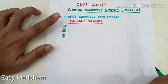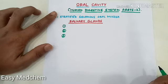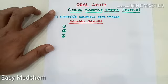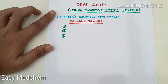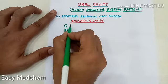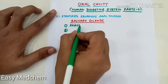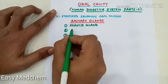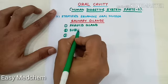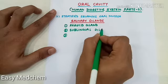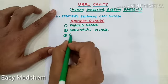Salivation occurs due to nerve signals that tell the salivary glands to secrete saliva and prepare moisture in the mouth. Each pair of salivary glands secretes saliva with a slightly different composition. The three pairs are: the parotid gland, the sublingual gland, and the submandibular gland.